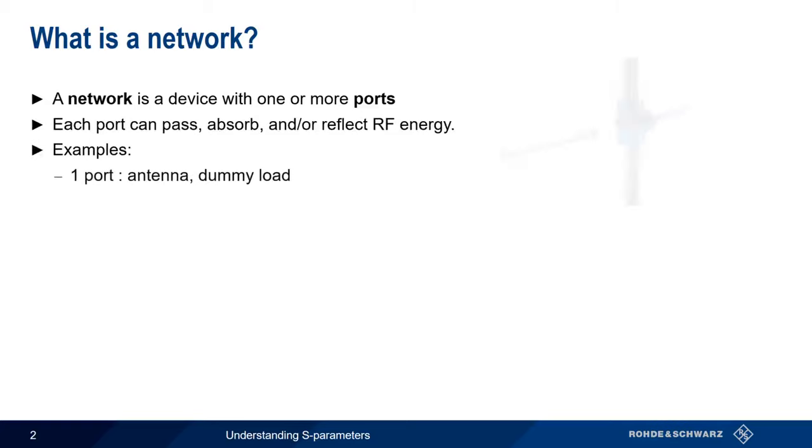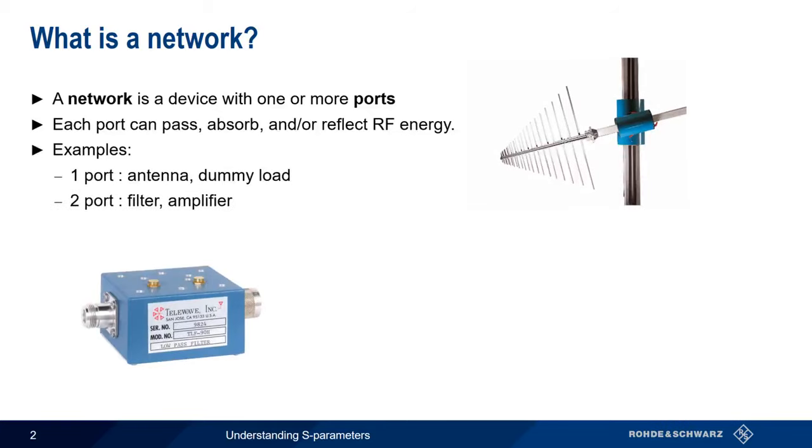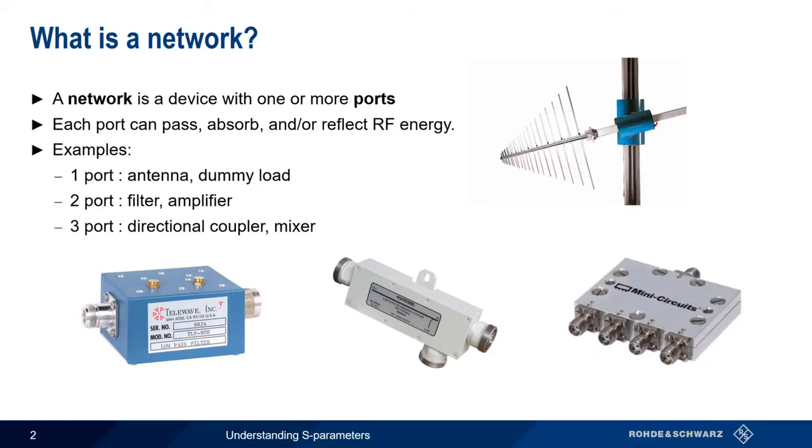An example of a one-port network would be an antenna, or a dummy load. Common two-port networks include things like filters or amplifiers, and a three-port network could be a device like a directional coupler or mixer. One-, two-, and three-port networks are the most common, but networks with higher number of ports also exist.